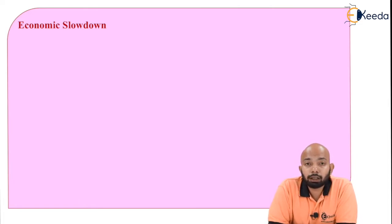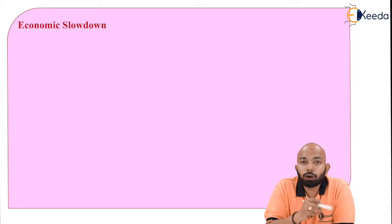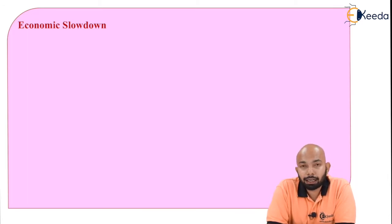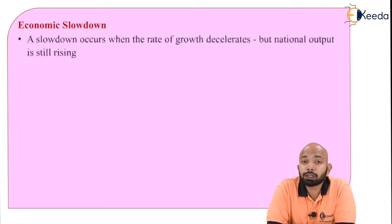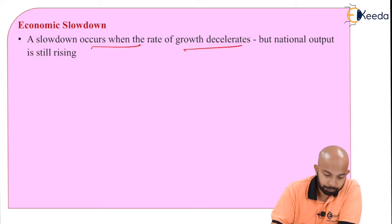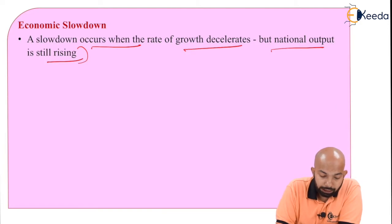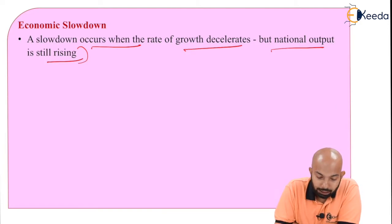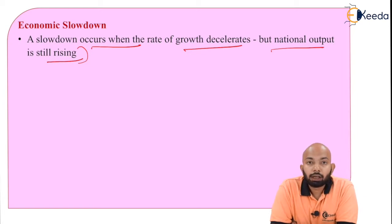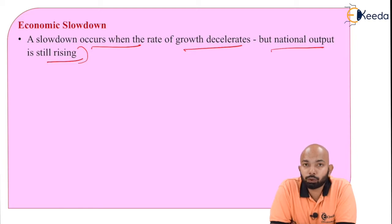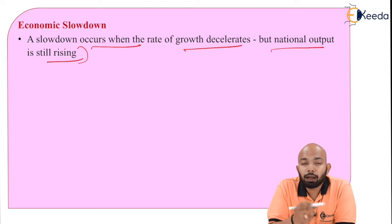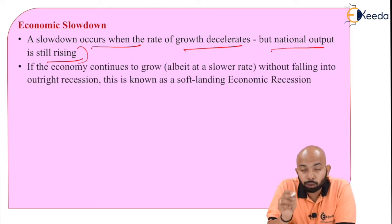This was about economic boom, also called inflation. On the contrary, the other cycle we can understand is the economic slowdown, also known as deflation. A slowdown occurs when the rate of growth decelerates but national output is still rising — it is not going negative. The lower growth rate is what is known as an economic slowdown.